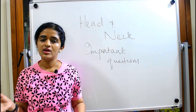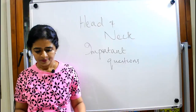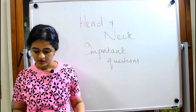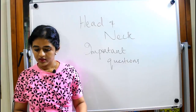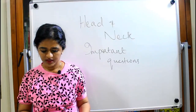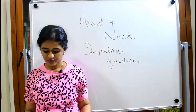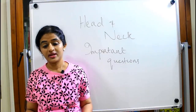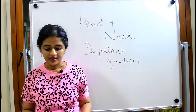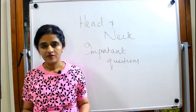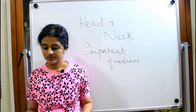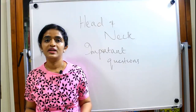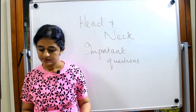Coming to the parathyroid gland — the location and nerve supply are usually favorite questions. Coming to the pre- and paravertebral regions: the scalene muscles — anterior, medius, and posterior — were once asked together as a short note. The scalene triangle and subclavian triangle were also asked once. The cervical plexus and phrenic nerve are favorite questions from this region, as are the cervical sympathetic ganglia — superior, middle, and inferior — which are again a favorite question.